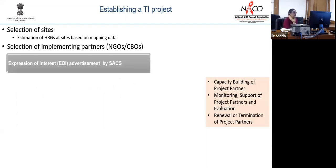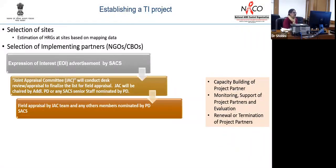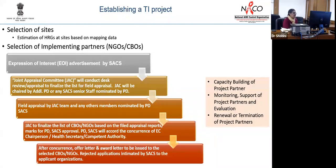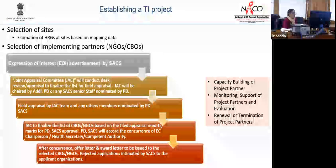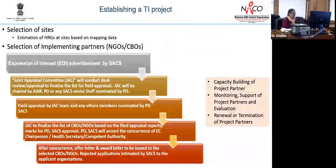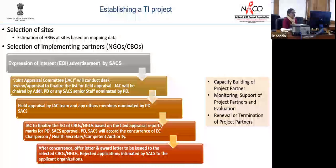Targeted intervention projects are established through state AIDS societies releasing an expression of interest, followed by a joint team conducting a desk review to decide which organization gets the project. Funds are part of the annual action plans of the various state AIDS control societies. Selection of sites is based on the estimation of key populations at various sites.